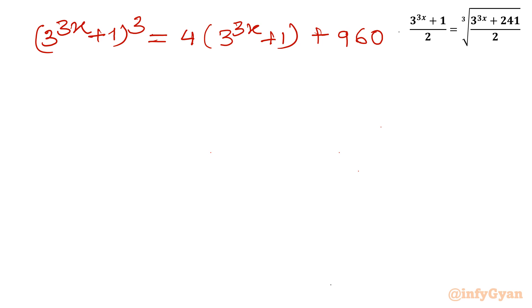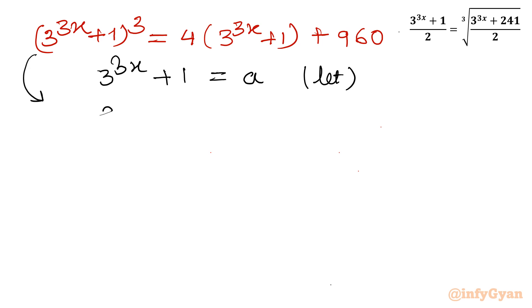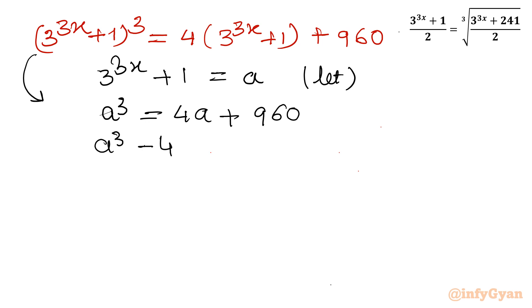Now we substitute: let a = 3^(3x) + 1. Our equation then becomes a^3 = 4a + 960, or equivalently a^3 − 4a − 960 = 0. This is a cubic equation.